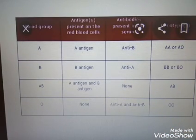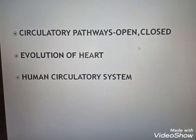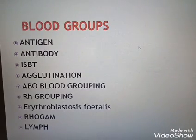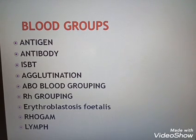A group has Antigen A and Antibody B. This is the ABO blood group system.